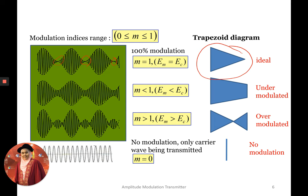For M less than 1, this is called under modulation. This is where the amplitude of the modulating signal is less than the amplitude of the carrier signal. On the envelope, you will see a gap at the minimum peak. When the modulation index is near 0, this gap will be bigger, and as it approaches 1, the gap becomes smaller and smaller until the peaks touch each other.